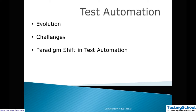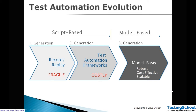In automation, we'll focus on three concepts: evolution, challenges, and the paradigm shift in test automation. Old tools like WinRunner, QTP, or UFT started with a concept called record and playback — a very fragile model with high maintenance, generally not used in industry. The first generation was record and playback. Then people shifted to framework-based automation: modular framework, keyword-driven, data-driven, hybrid framework. In Selenium there are frameworks like page object model, behavior-driven using Cucumber and SpecFlow.